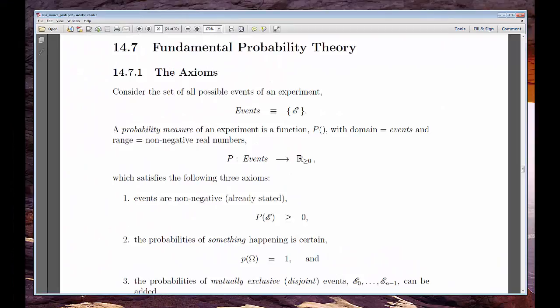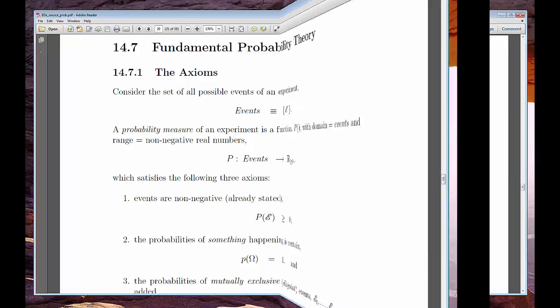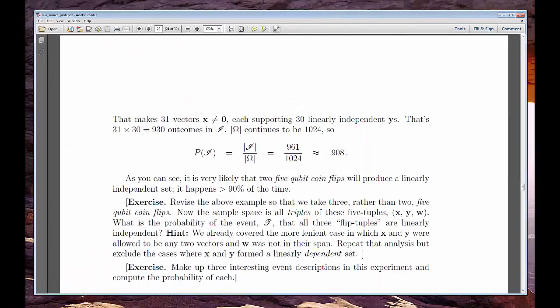Once we do a few examples and exercises in this 10-qubit coin flip setting, it'll be time to introduce formal probability language. We'll first go over the axioms, then give a computable definition that the probability of some event occurs.